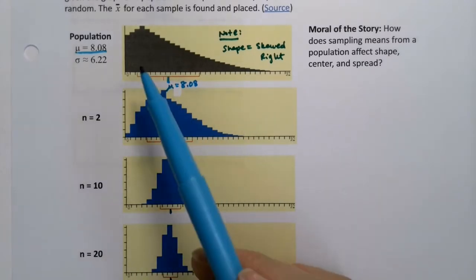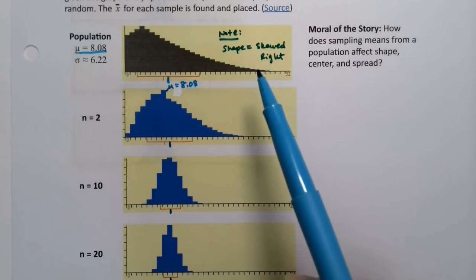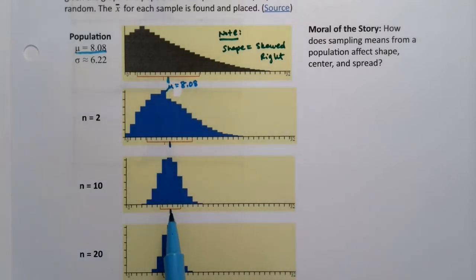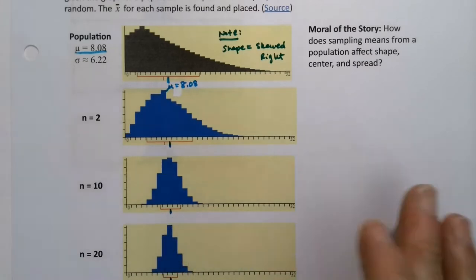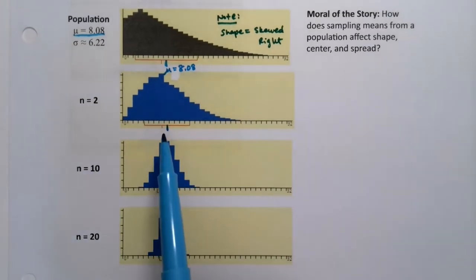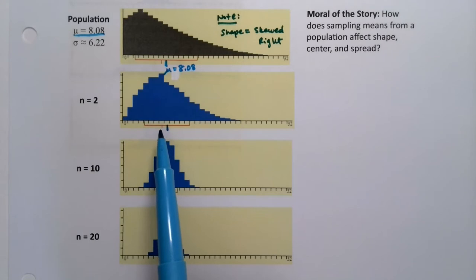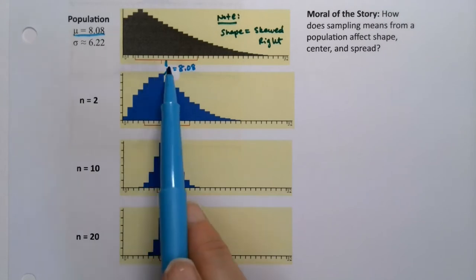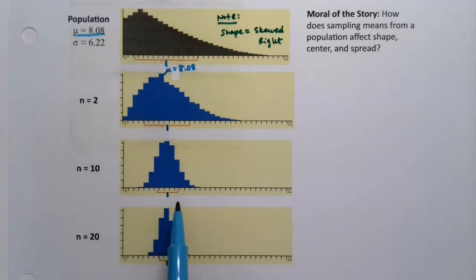Down here it's become symmetric enough that the mean and the median are right on top of each other, so there aren't two lines — there's just one. That's the median and the mean. And at the bottom graph, the mean and median are at the same spot.